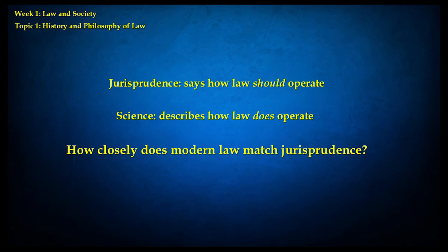Keep in mind that jurisprudence is how law should operate — it's often called legal theory, but it's not theory in the scientific sense of describing how things work. It's more philosophy or ethics saying how things should work. Science, on the other hand, describes how things do work. So we can ask: how closely does modern law match jurisprudence? That is a topic we'll take up in our next couple of lectures.